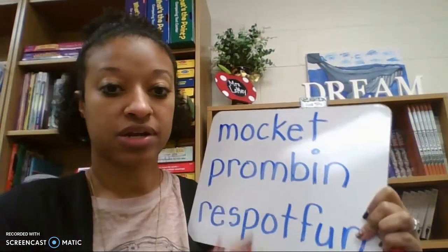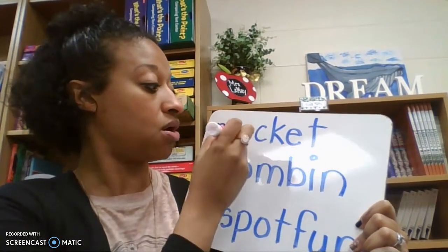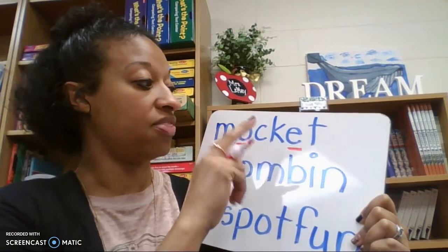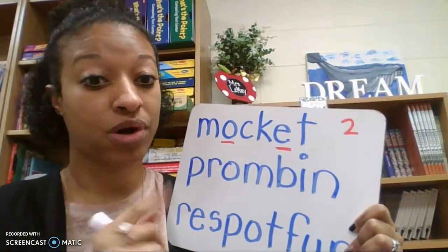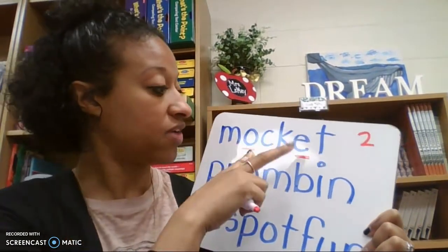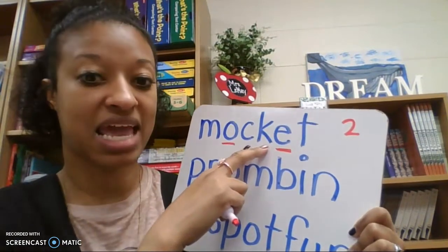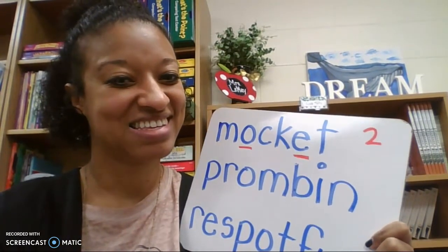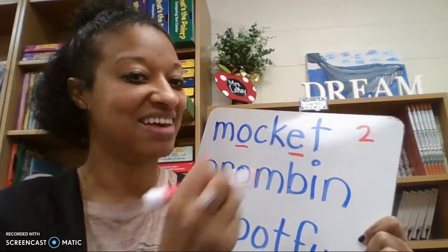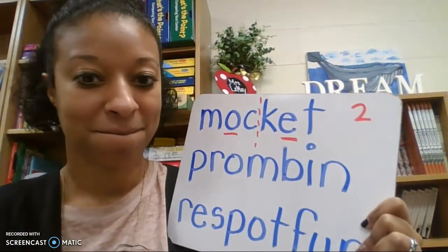Let's look at our first one. You should have underlined the vowels last time — they should be O and E. They are spaced apart, so there are probably two syllables in this word. We need to figure out where to break apart our word. Here's a vowel, here's a vowel — let's look between them. There's a C and a K. Where would we break it apart? You do it first, then I'll do it — try and beat me. It is between the C and the K.